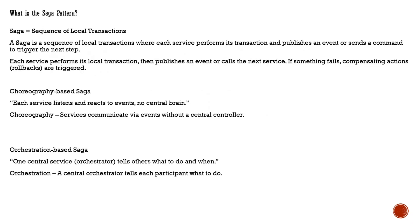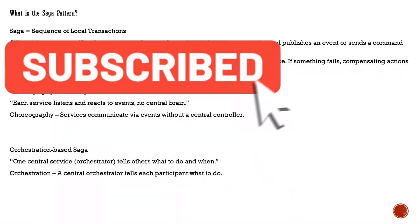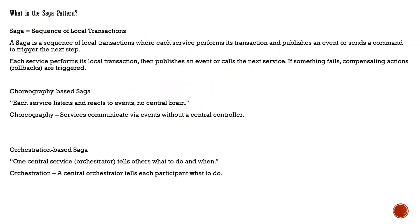The Saga design pattern is nothing but a sequence of local transactions. Whenever each service performs a transaction, it publishes a certain event or sends a command to trigger the next set of transactions. If something fails, it is going to issue a compensating action, also called a rollback, which will be triggered.